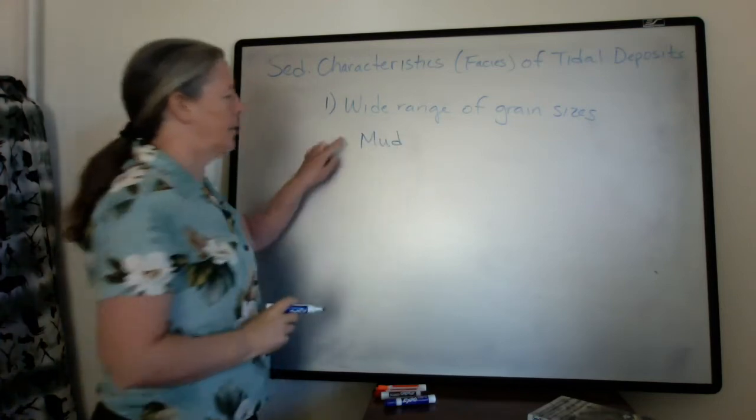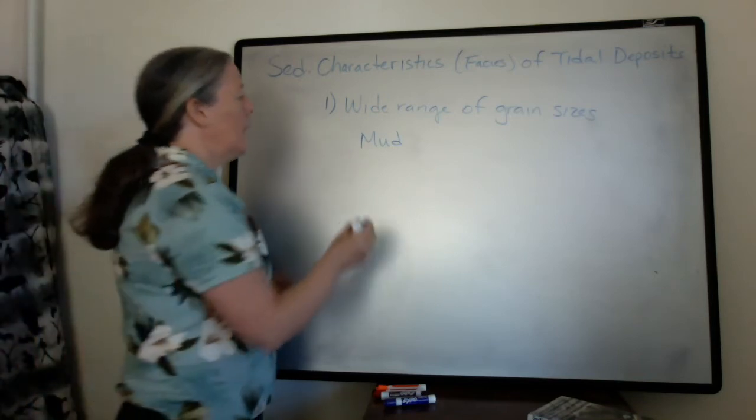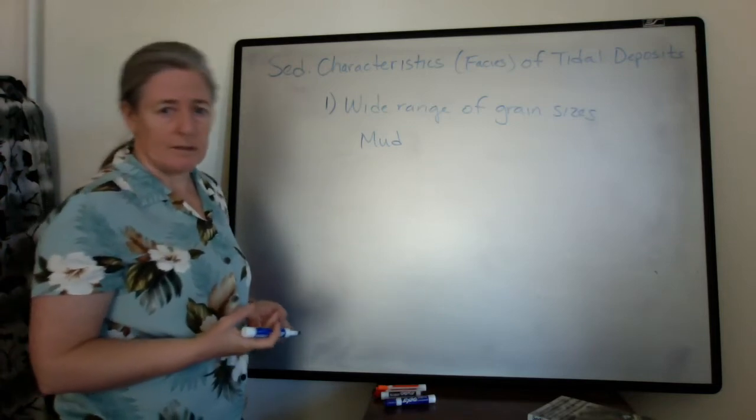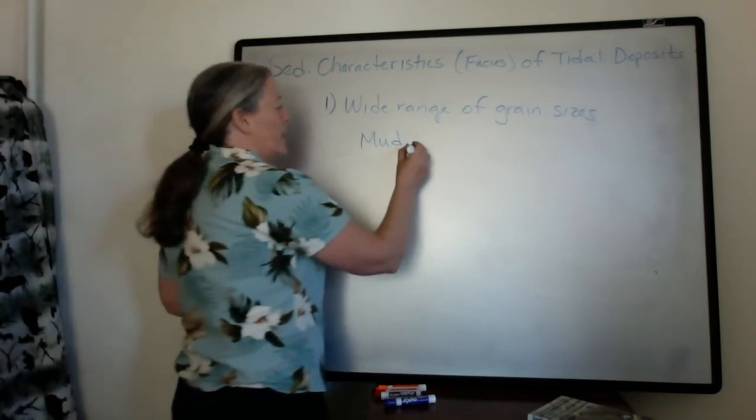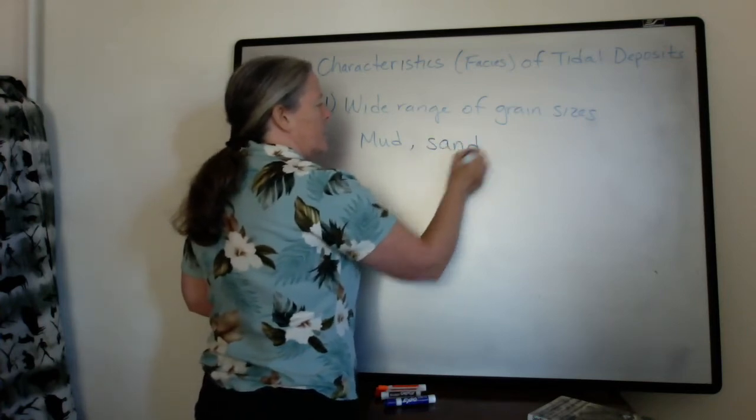And this mud is accumulating when the flow speed is very low at high and low tide. And then the larger grain sizes depend on the sediment that's available and supplied to that zone. Almost always it includes sand.